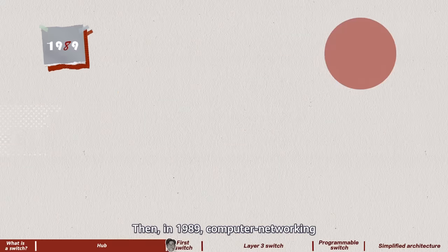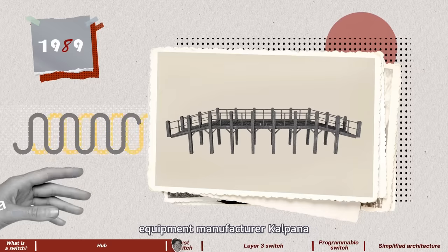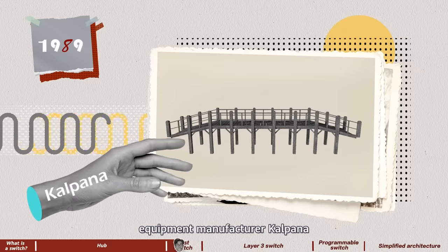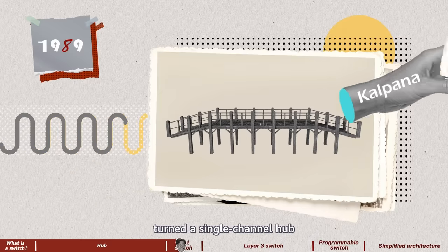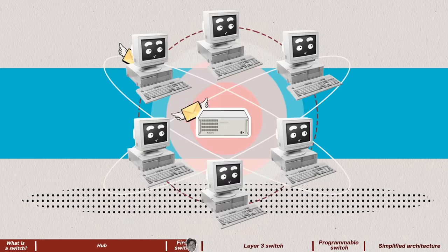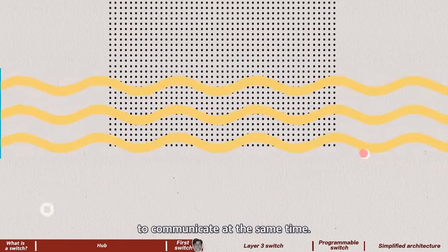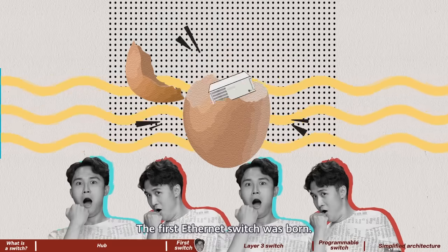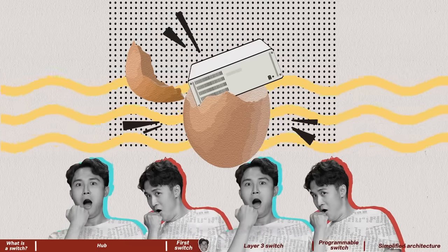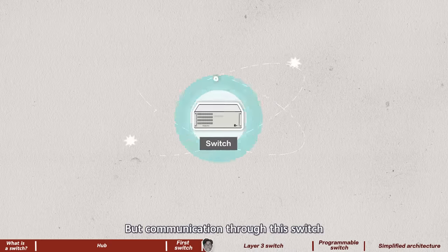Nevertheless, it was a state-of-the-art communication device for its time. Then in 1989, computer networking equipment manufacturer Kalpana turned a single-channel hub into a switch using a switching matrix, allowing multiple computers to communicate at the same time. The first ethernet switch was born.